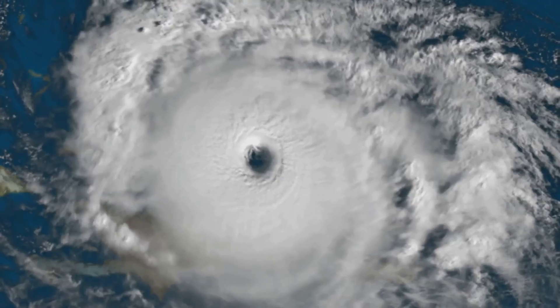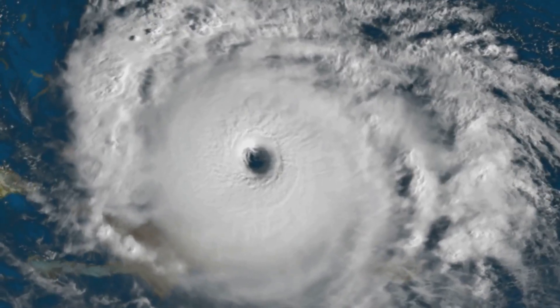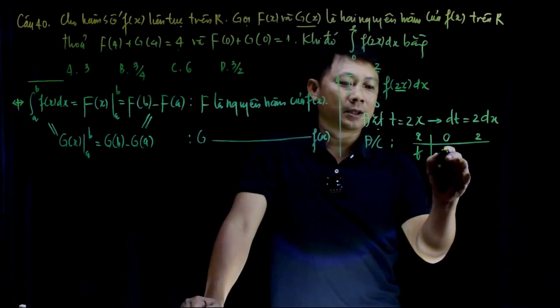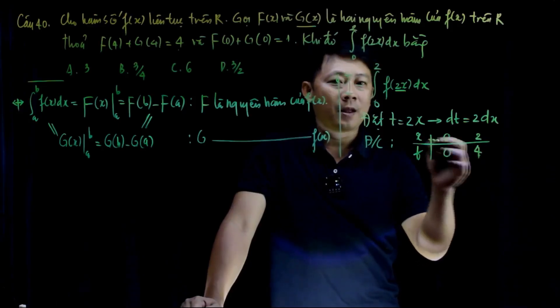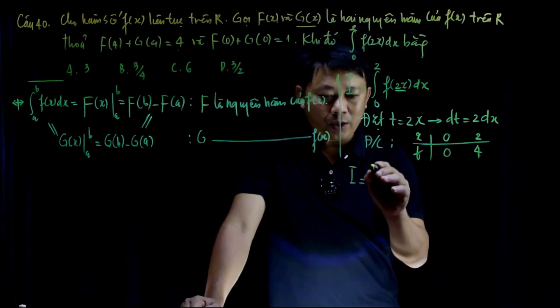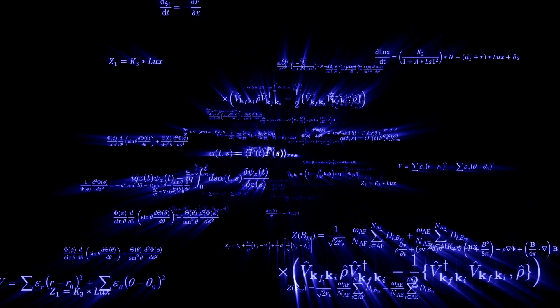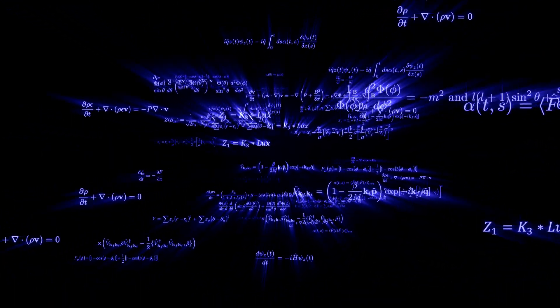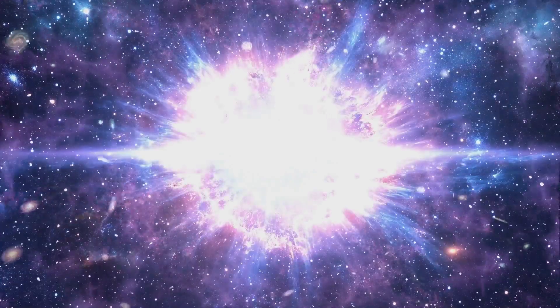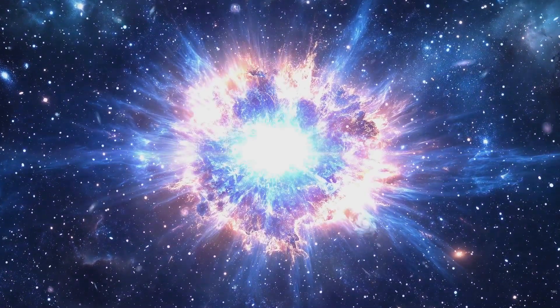It's like trying to describe the ocean's currents while standing in the middle of a hurricane. This is the domain where the marriage of quantum mechanics and general relativity becomes absolutely crucial. We need a theory of quantum gravity to illuminate these dark corners of the universe. Such a theory would not only explain the mysteries of black holes, but also shed light on the very birth of our universe — the Big Bang.